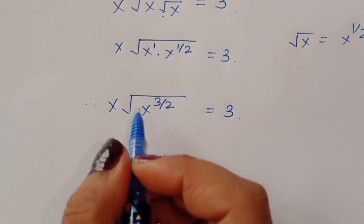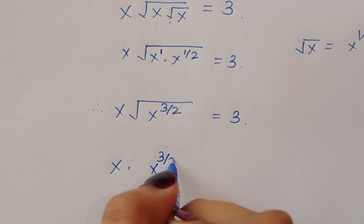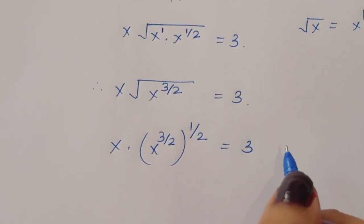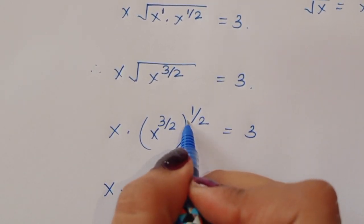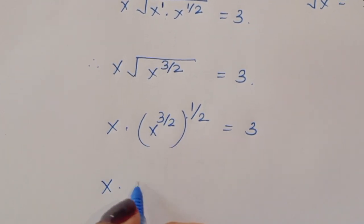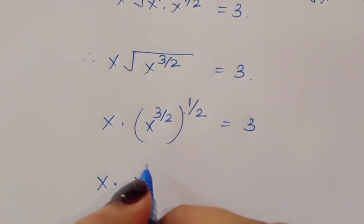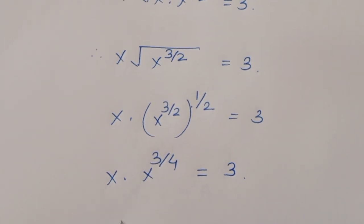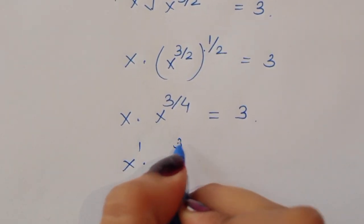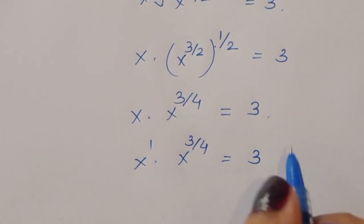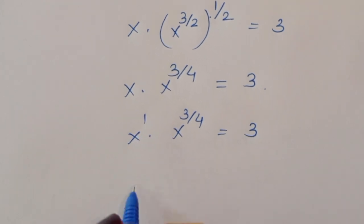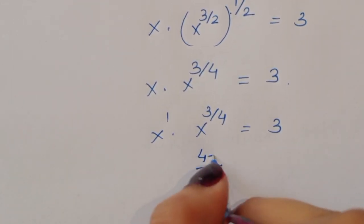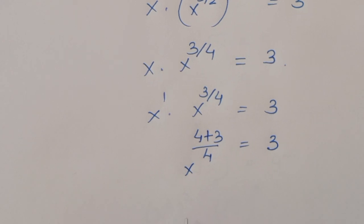Now, x times x power 3 by 2, and there's still a square root, so we write x power 3 by 2 times 1 by 2, giving x power 3 by 4. So we have x times x power 3 by 4 is equal to 3. Adding the powers using LCM: x power 1 times x power 3 by 4.